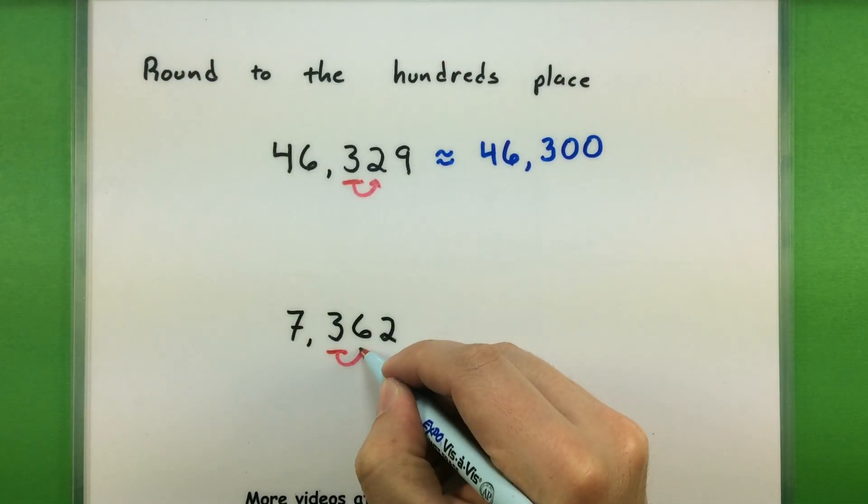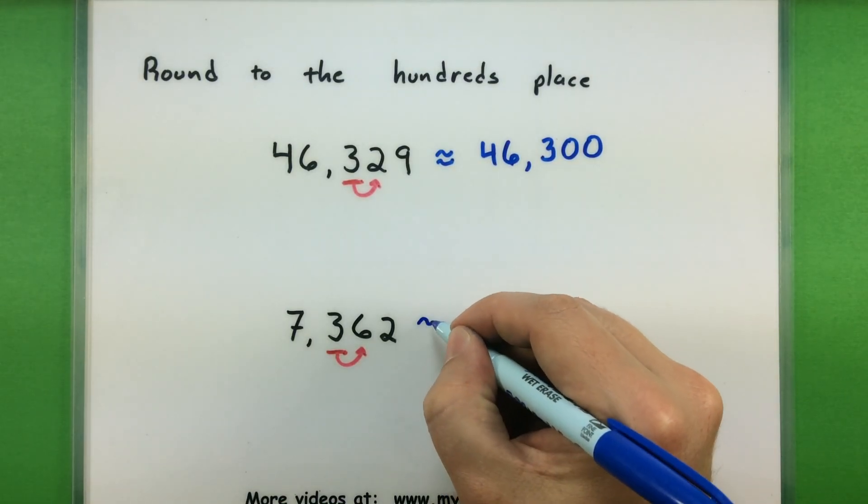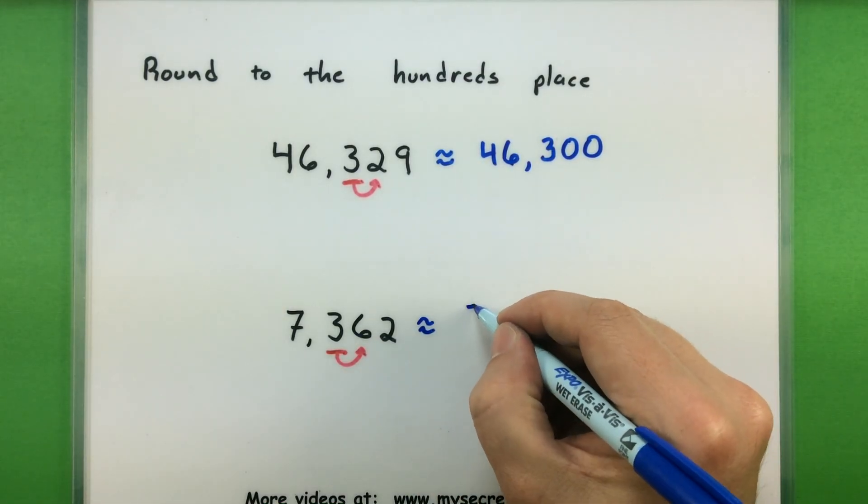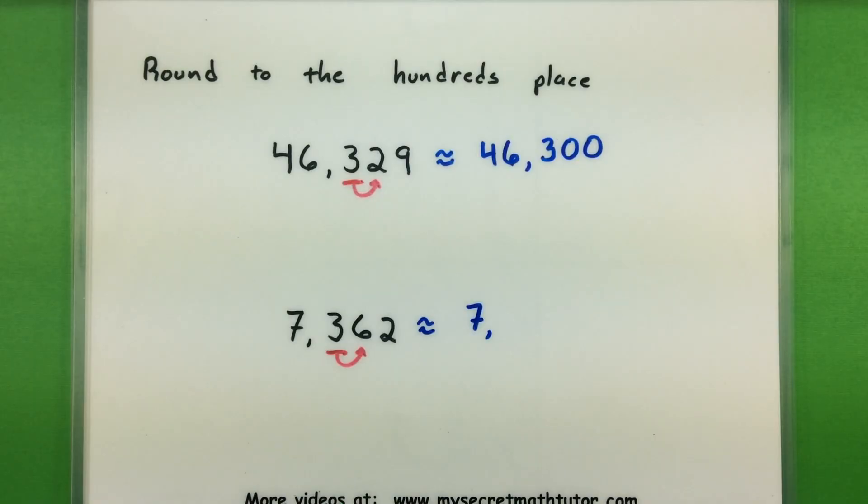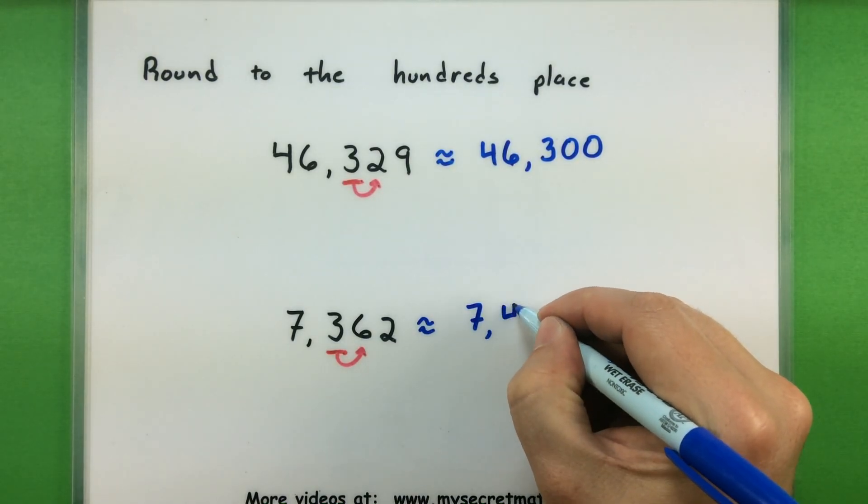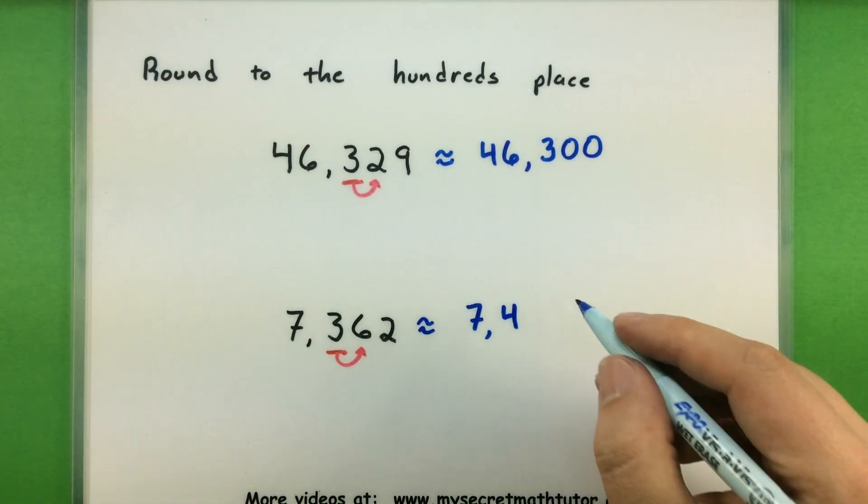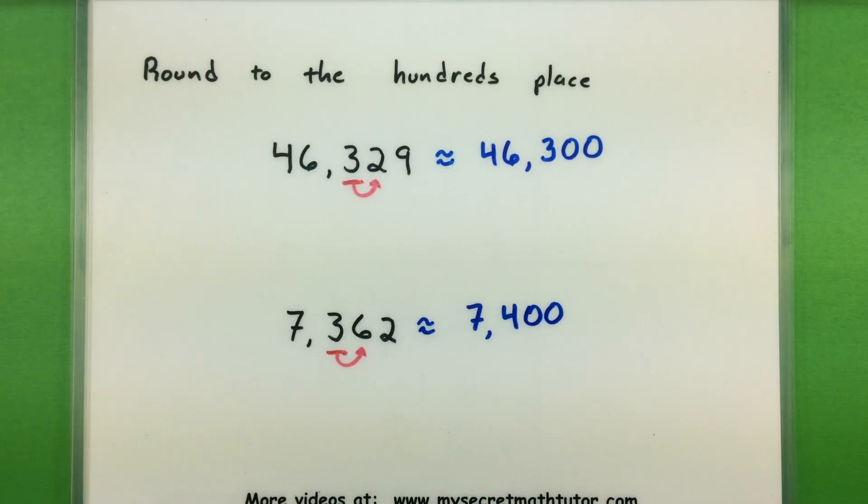Now we'll check the number immediately to the right to see how big that one is. This one is a 6, so I need to round it up. Everything to the left is going to stay the same. I'll still have a 7, and now I need to figure out what I'm going to do with that 3. Since we are rounding up, I'm going to round it to the next biggest number, so it's going to turn into a 4, and then everything after that is going to be a 0. So this one is now 7,400.